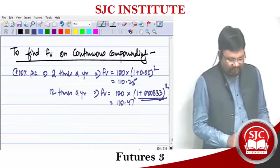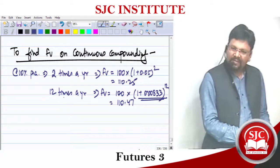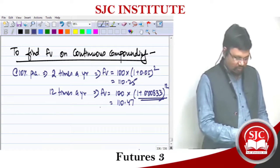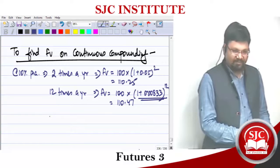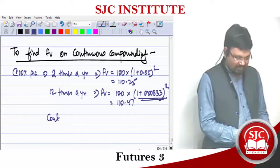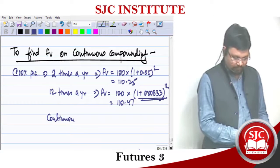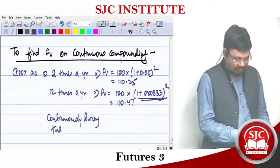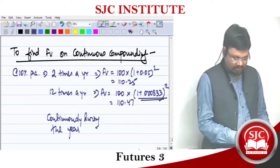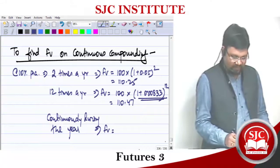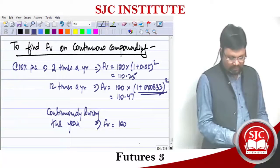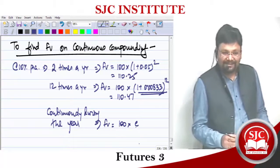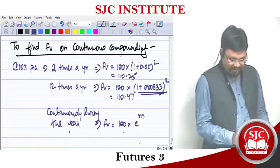So you see — the more the number of times it is compounded, the higher would be the future value. Now say I'm compounding continuously during the year. In this case, future value would be equal to 100 into e to the power Rn.